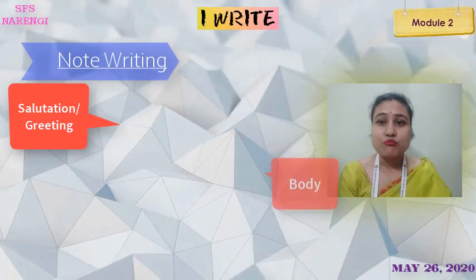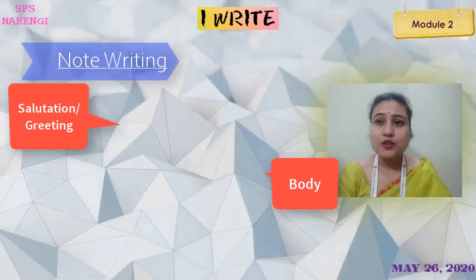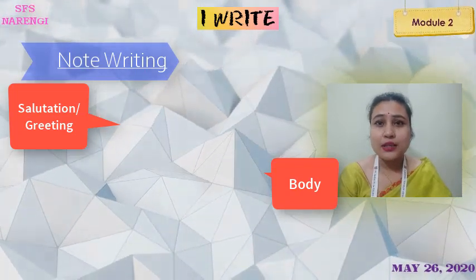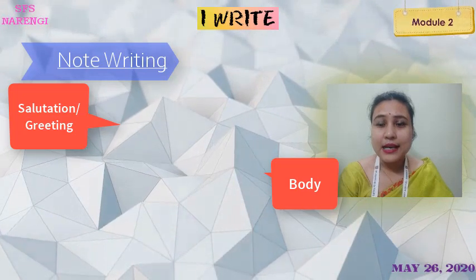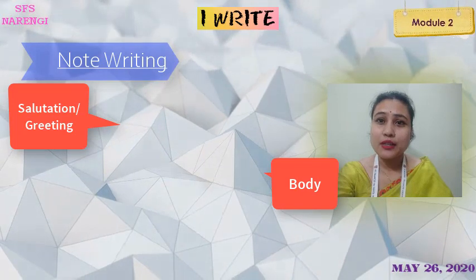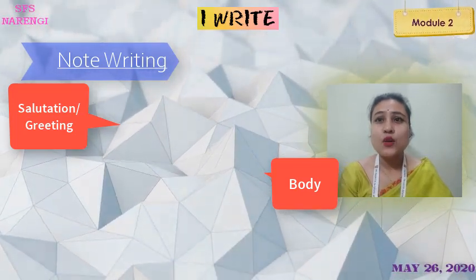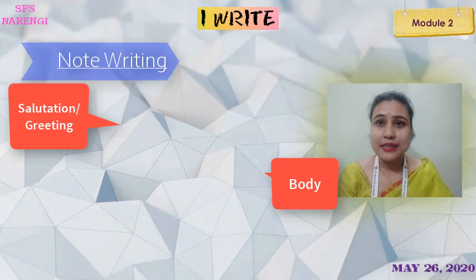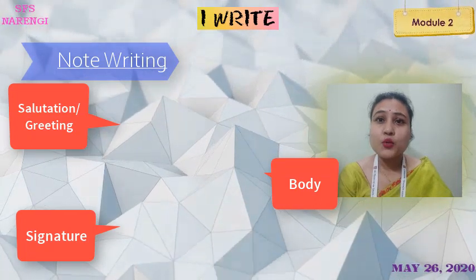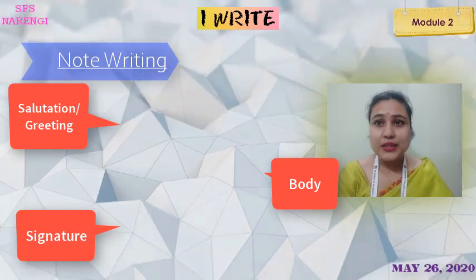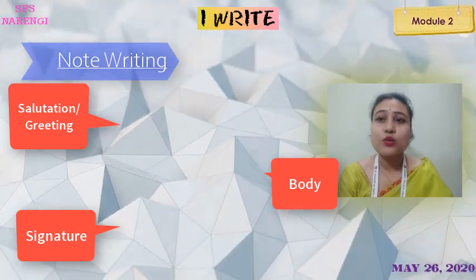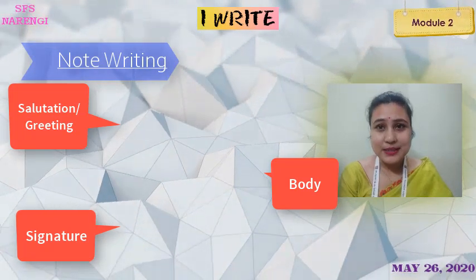The second part is the body. The body is the part of the note where we write only the main idea that we want to convey. As notes are written in only one or two sentences, the body has to be very precise — you write down only the main points. The last part of the format is the signature. Signature includes the name of the note writer, and it is the last line of the entire note. How you sign off also depends on how close you are to that person.